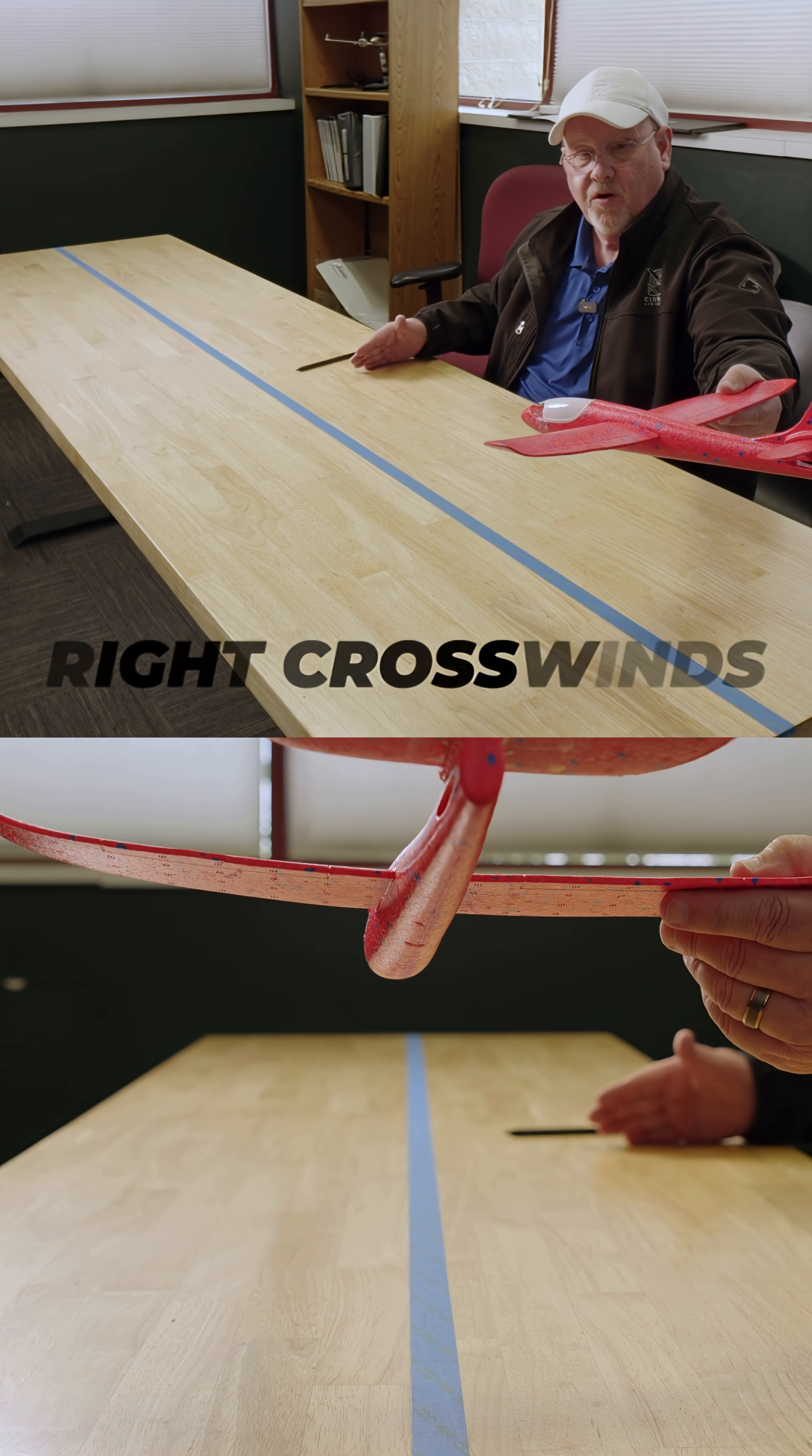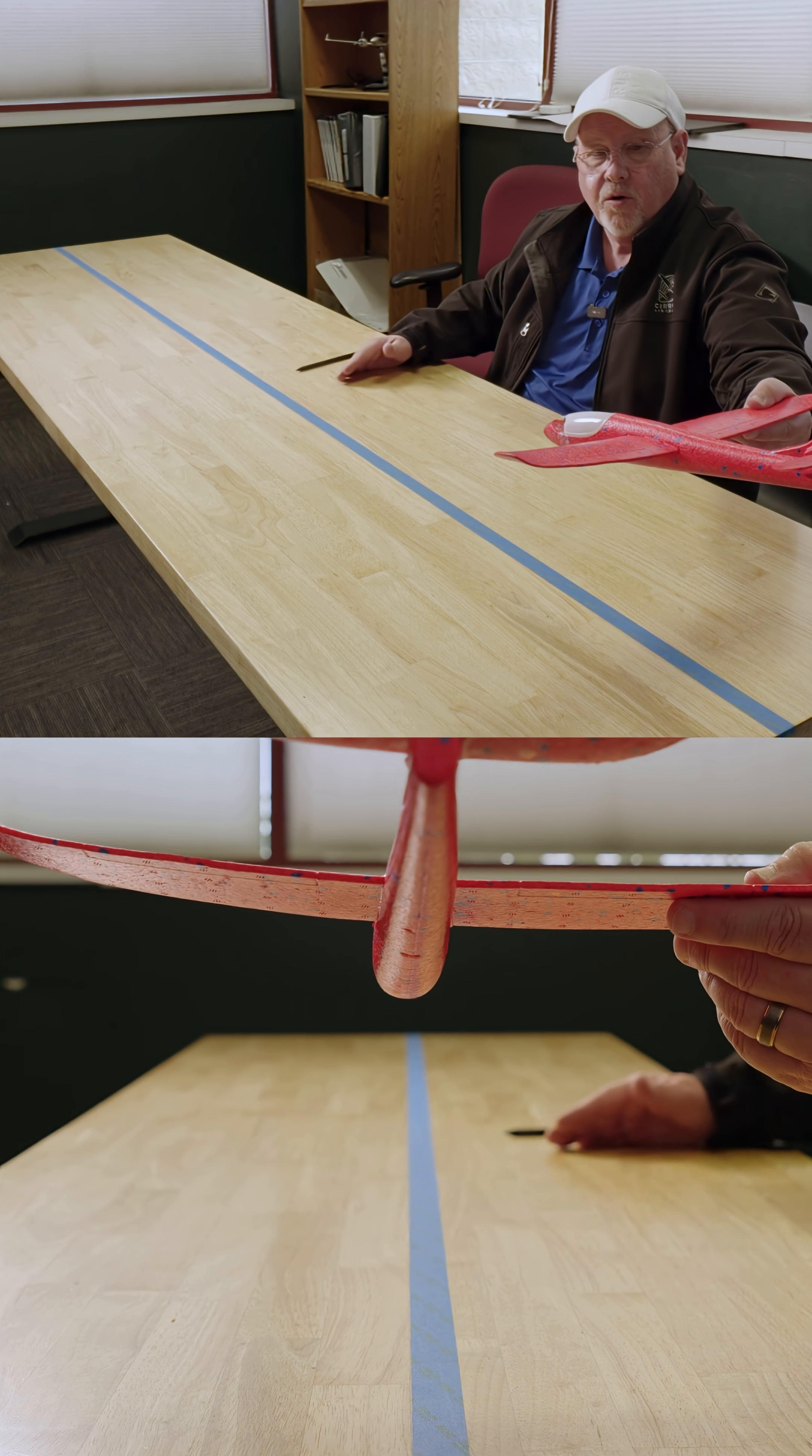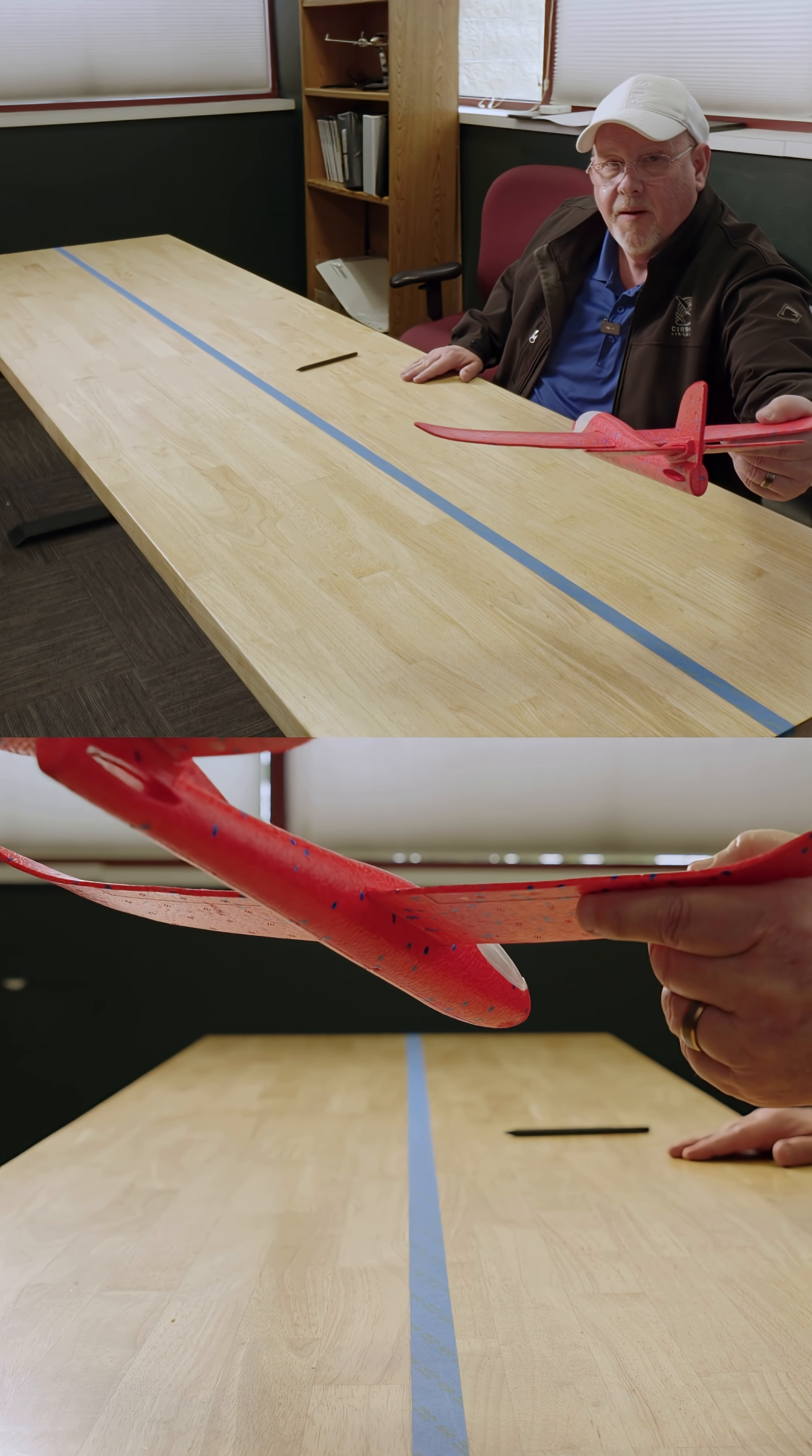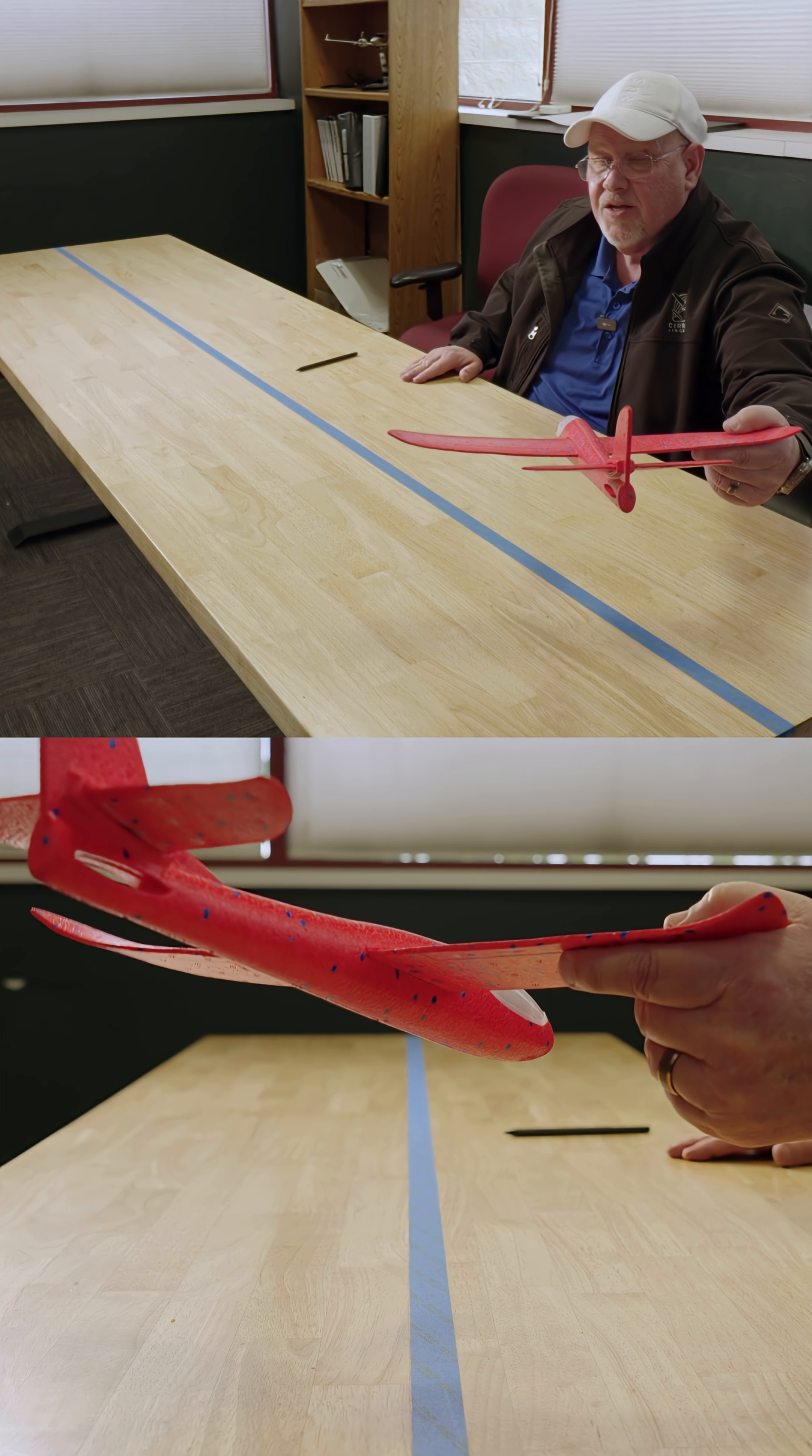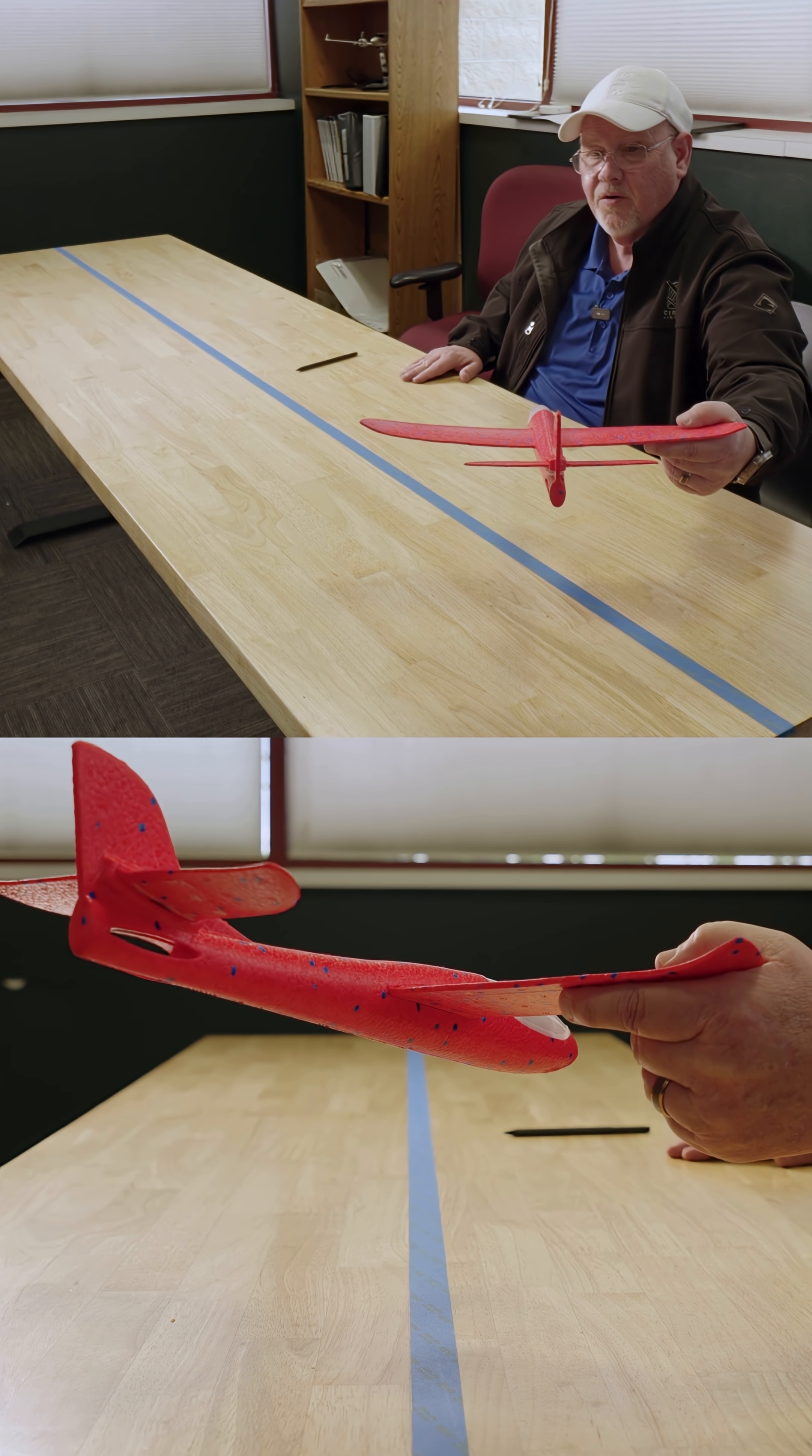In this example, we have a crosswind from the right, and we're going to crab down final. Remember, a crab is just a heading change. There's no aileron, there's no rudder, it's coordinated.